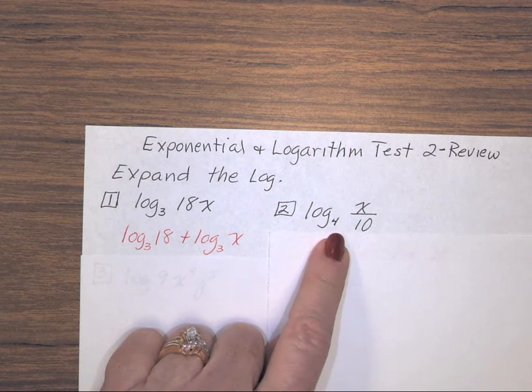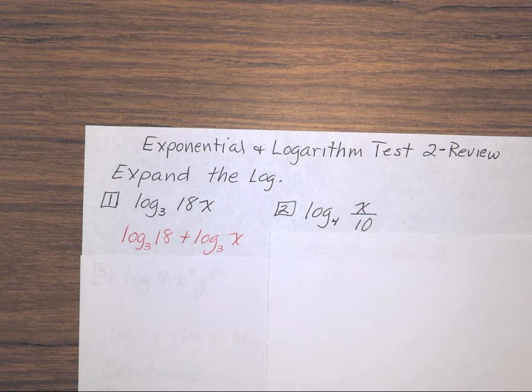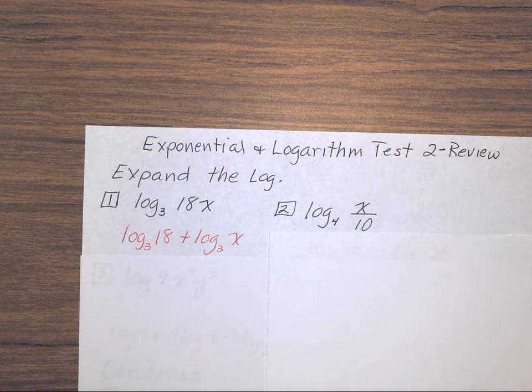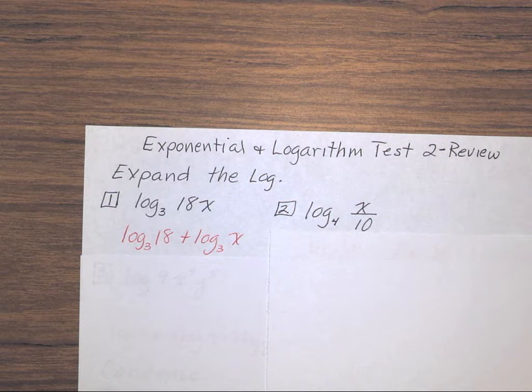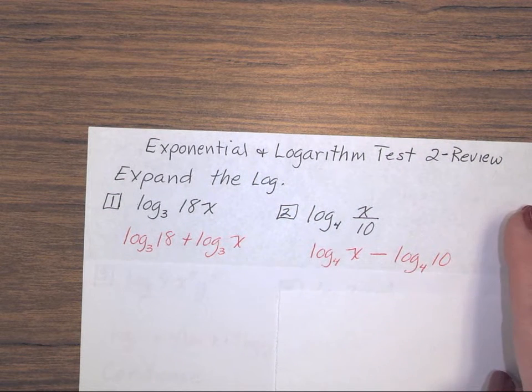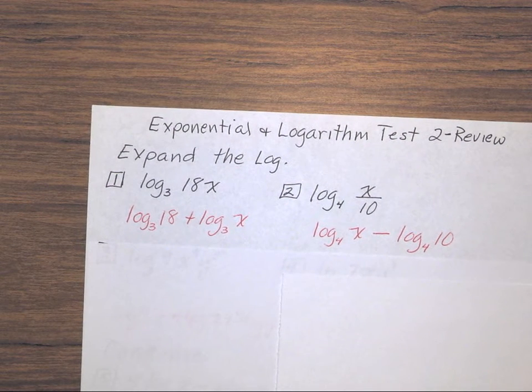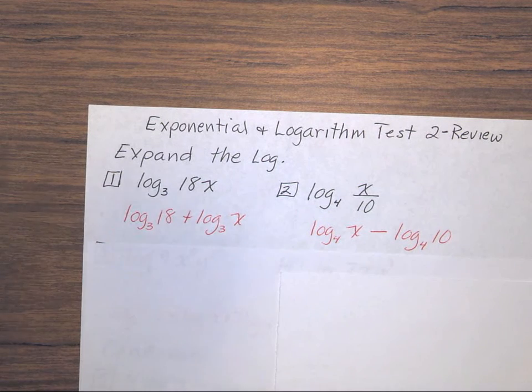For number 2, when you have a log of two values that are being divided, then as separate logs, they are being subtracted. It is the one in the denominator that is subtracted. So we have log base 4 of x, minus log base 4 of 10.